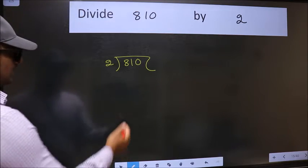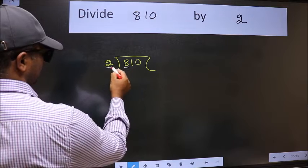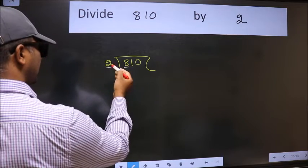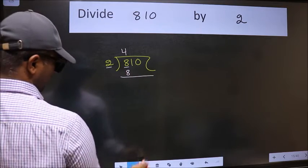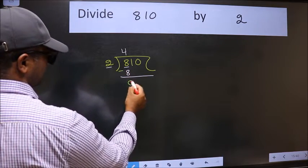Next, here we have 8 and here 2. When do we get 8 in the 2 table? 2 fours 8. Now we should subtract. We get 0.